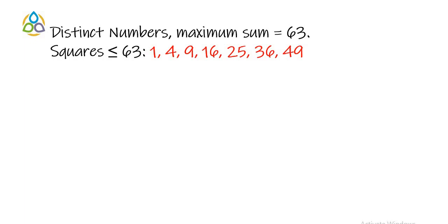First one is 1 because it is 1 square. Second one is 4 that is 2 square. Third one is 3 square that is 9. 4 square is 16. 5 square is 25. 6 square is 36. 7 square is 49. Next number, next square number is 8 square which is 64 that is greater than 63. So, we will not consider that particular number.